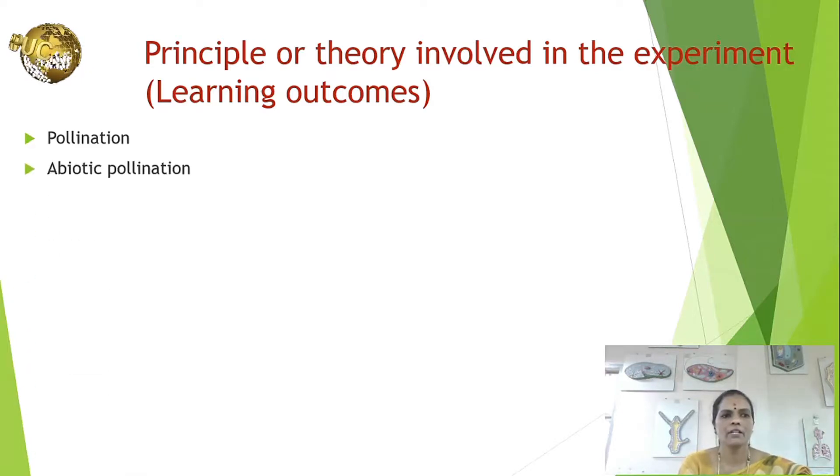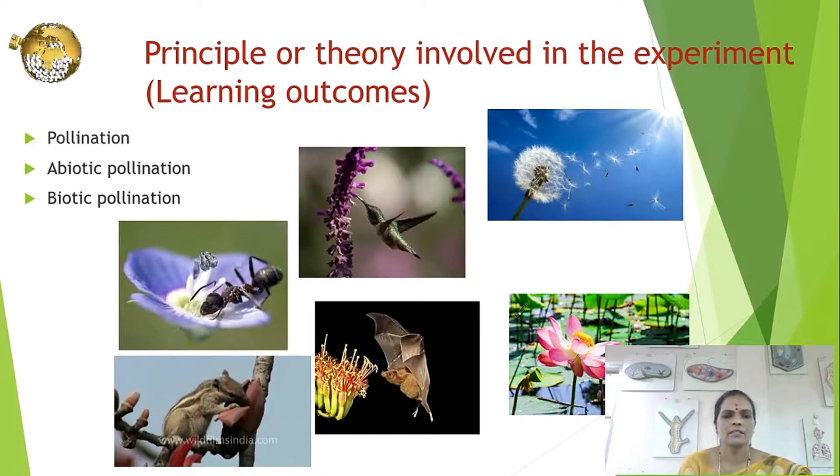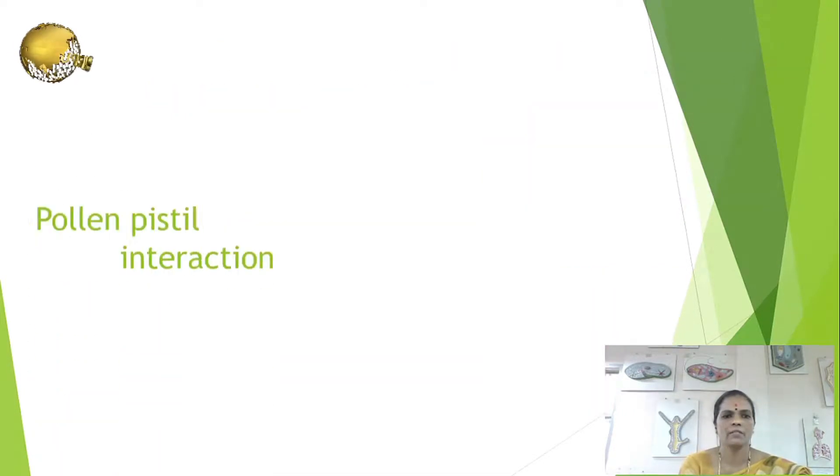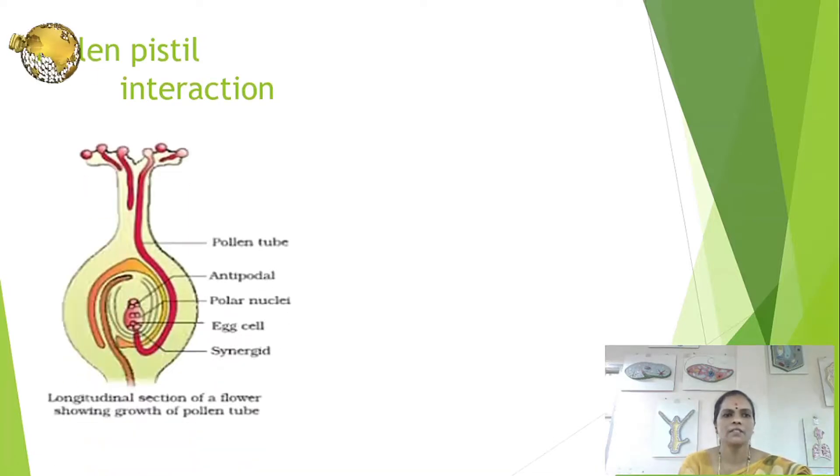Abiotic pollination occurs by wind and water. Biotic pollination occurs by insects, birds, and animals. Pollen-pistil interaction covers the sequential events from pollination until the pollen tube enters the ovule. During this interaction, the pistil screens for the right type of pollen grain.